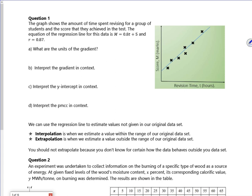Right, so let's have a look at question one. So question one says the graph shows the amount of time spent revising and their score. So as you would expect, the more time you revise, the better your score is. So we've got an equation which is M equals 0.8t plus 5 and then r is 0.87. So what are the units of the gradient? So it's a change in y over a change in x. So it's marks per hour.